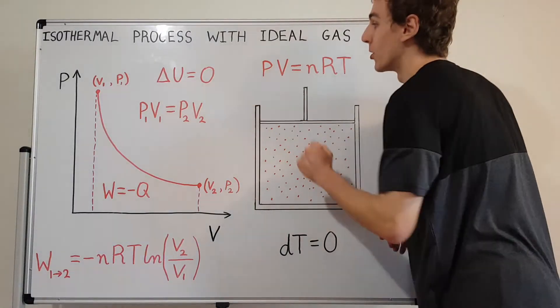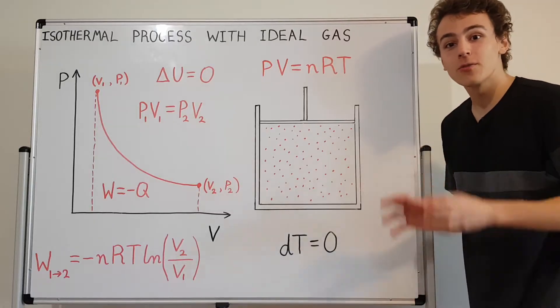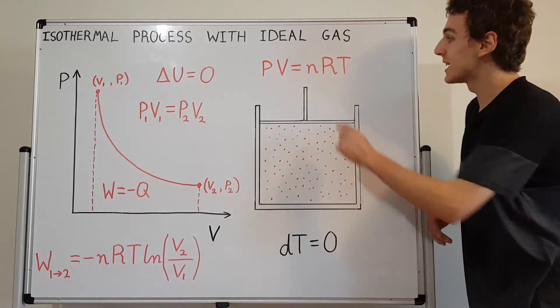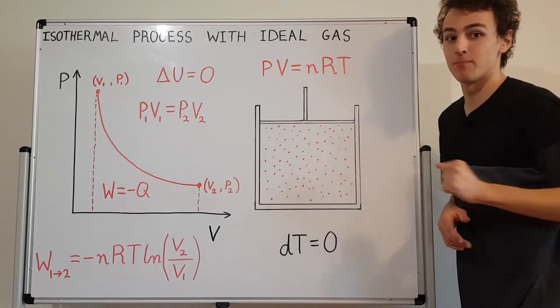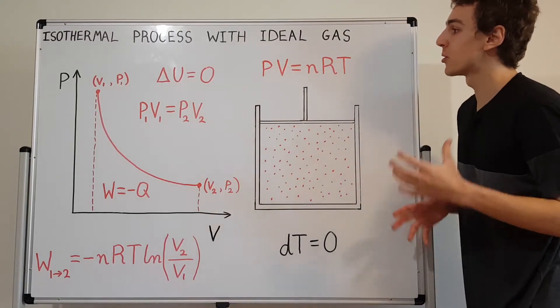So these guys conspire together to keep the change in internal energy zero. And this is because all of these quantities conspire together to keep the temperature constant. So all the other values are conspiring to keep this value the same. So it's not allowed to change, but these guys are allowed to change. The pressure and volume can change.